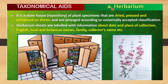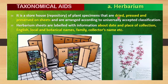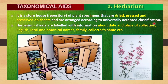First, let's discuss the herbarium. A herbarium is a storehouse — a repository of plant species that are dried and pressed. The plant species stored here are in dried form, pressed and preserved on herbarium paper sheets. These sheets are arranged according to universally accepted classification systems, stored in cupboards.